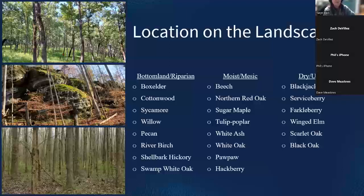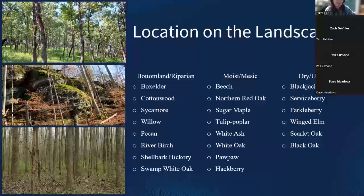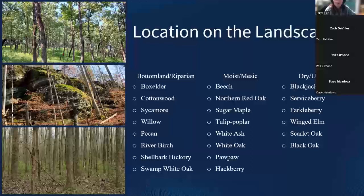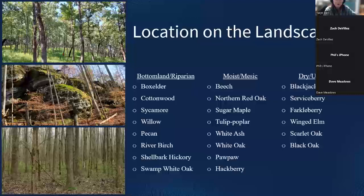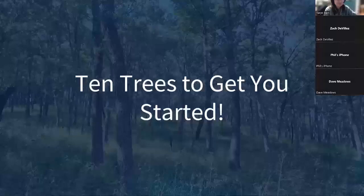Location on the landscape is also a clue. In bottomland areas it's common to see cottonwood, sycamore, and willow. In moist mid-slope areas and valleys, you'll find beech, northern red oak, sugar maple, and tulip poplar. Dry uplands are where blackjack oak and farkleberry tend to be found. Some species like American elm, sassafras, black cherry, and red maple can be found in all three settings. These are general rules of thumb — you'll sometimes find them in unexpected areas. And with that, we'll go into our 10 trees to get you started.